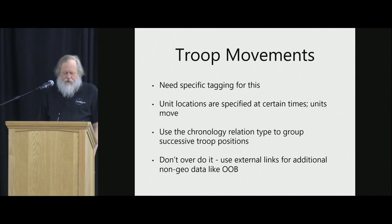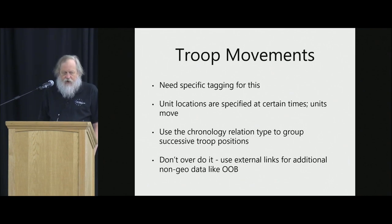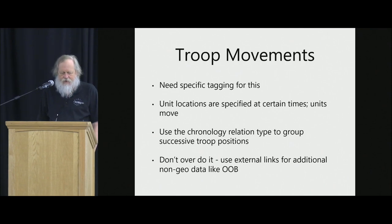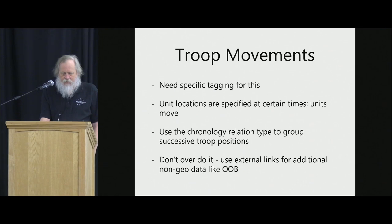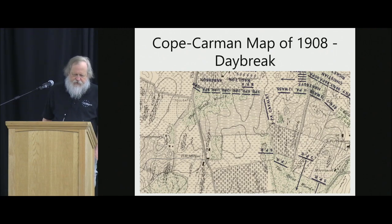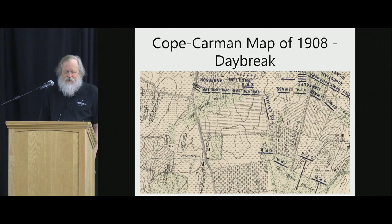Troop movements need specific tagging — we're going to have to create new tags, as there's nothing in OSM that even remotely touches on this. Unit locations are specified at times, but then units move. We have the chronology relation that Min gave us last year, so in geometry we can probably use ways to represent troop positions and then use chronology to group them together. We can link to Wikipedia and Wikidata. This is an example of the kind of data available — the Cope-Carmen map from 1908 showing positions of troops at daybreak, part of a series of maps at half-hour-to-hour intervals showing troop movement across the battlefield.